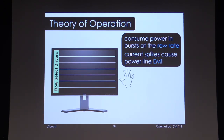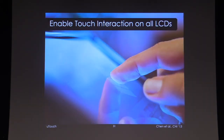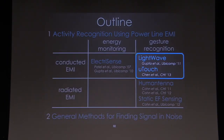Again, when your hand comes near or touches the display, you're going to capacitively load the row lines, and thus higher power consumption is seen when it drives that row. This enables touch sensing on all LCDs, not just touch LCDs. It's not the same — we can't tell you where you're touching, just whether you are touching or not. But the idea is, using just this noise on the power line and a single point sensor, you can turn all these screens into user inputs.